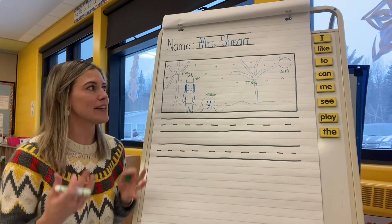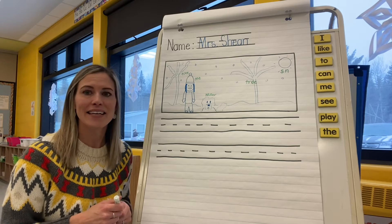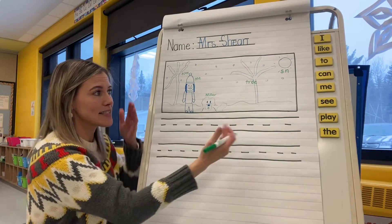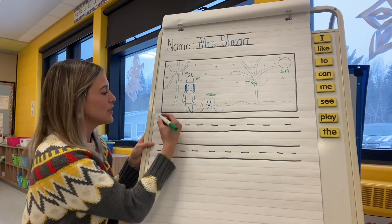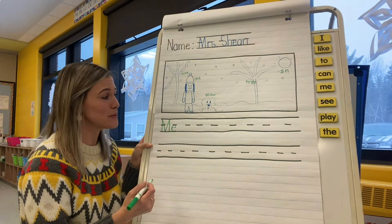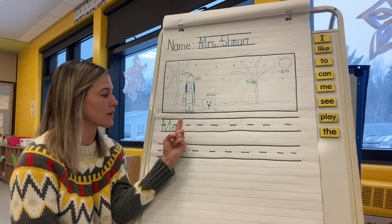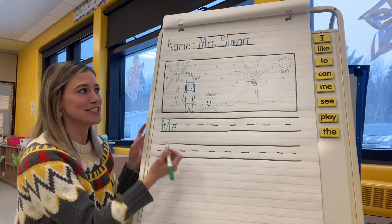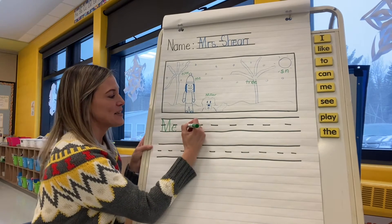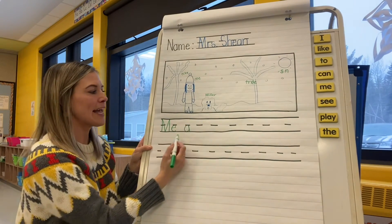Now that I've illustrated and labeled, I want to write my sentence. I think my sentence will be: me and Miller played in the snow. So the word "me" — I know me in a snap. It's been a good few weeks since we've all been together, so a quick reminder to use those finger spaces between your words. So: me and — it's not our sight word yet, but soon it will be. And, and... maybe an A. I'm going to put an A.